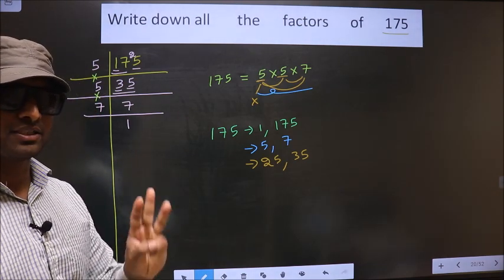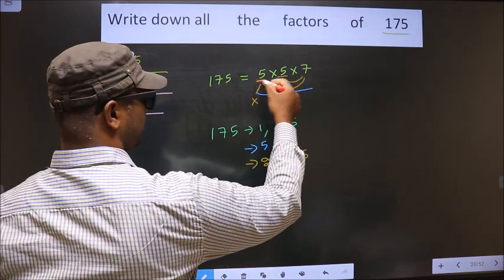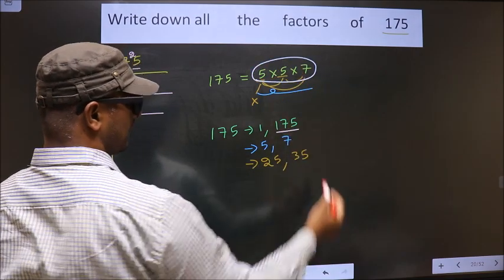Now you take a combination of 3 numbers. Here we have only 3 numbers. If we take all the 3 numbers, we get 175 itself.